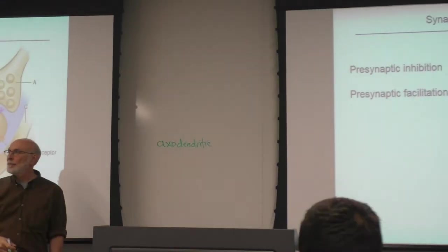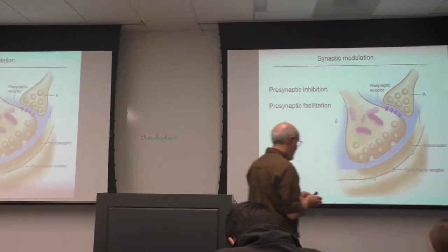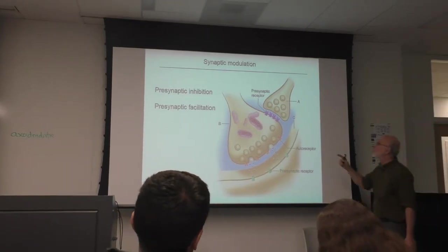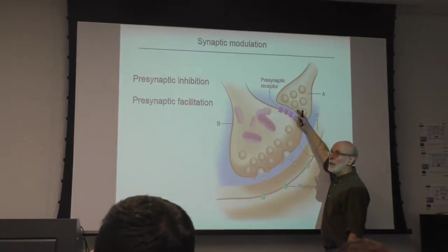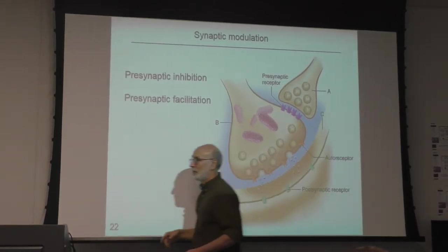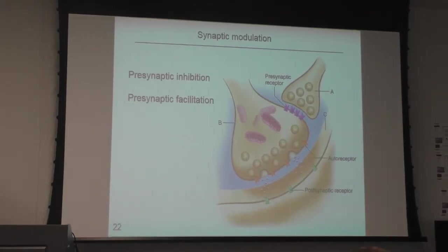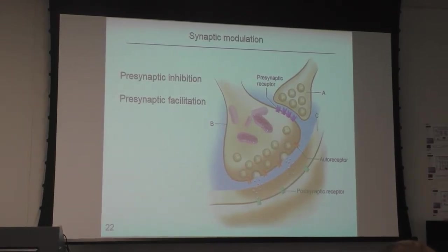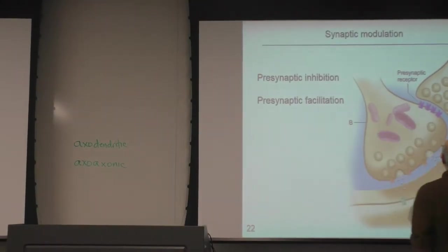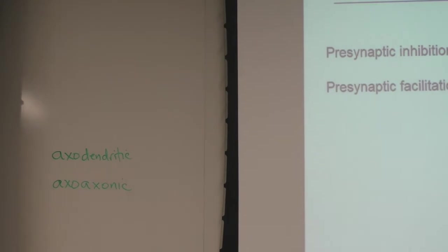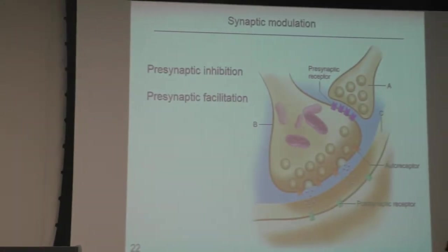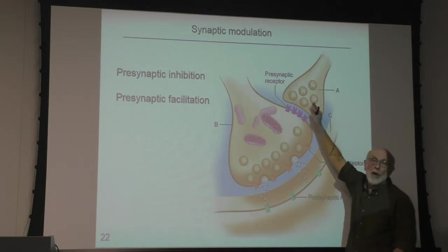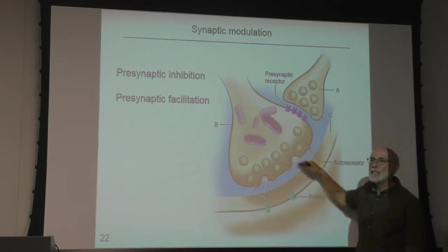Throughout the nervous system there's another kind of synapse — a modulatory synapse called an axo-axonic synapse. I don't really like the name because it's synapsing on the axon's synaptic terminal, not the axon itself — I would prefer it be called an axotermonic synapse, but they didn't ask me. The axon of a modulatory neuron is going to modulate the release of neurotransmitter at the primary synapse.